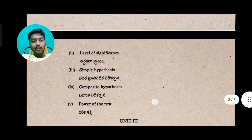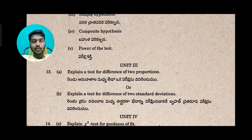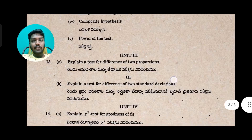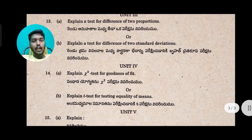Next question: explain test for difference of 2 proportions — this is a repeated topic. Next: explain test for difference of 2 standard deviations. And in the 4th topic, explain chi-square test for goodness of fit — same question is repeated.